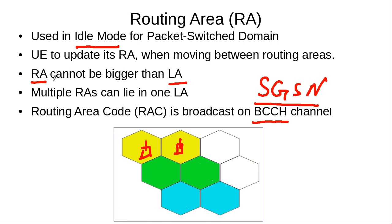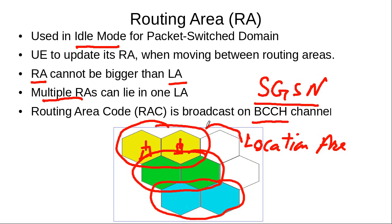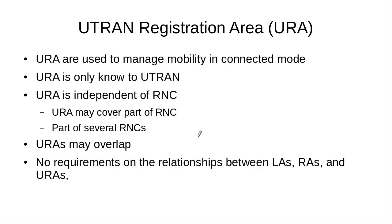Regarding the relationship between location areas and routing areas: a routing area cannot be bigger than a location area, and there can be multiple routing areas within a location area. For example, a single location area may contain routing area number one (yellow cells), routing area number two, routing area number three, and routing area number four — so this location area has four routing areas.